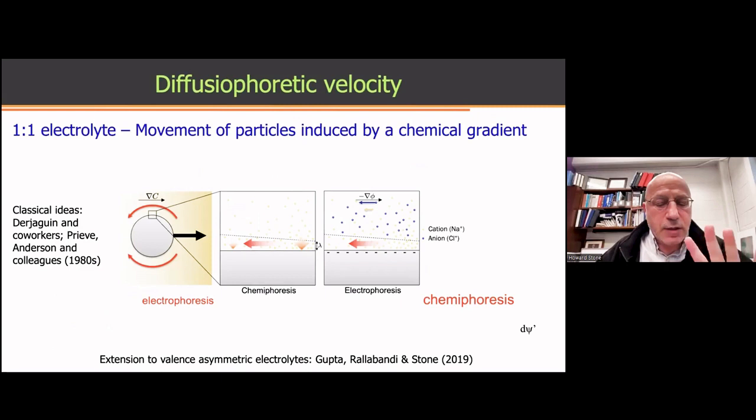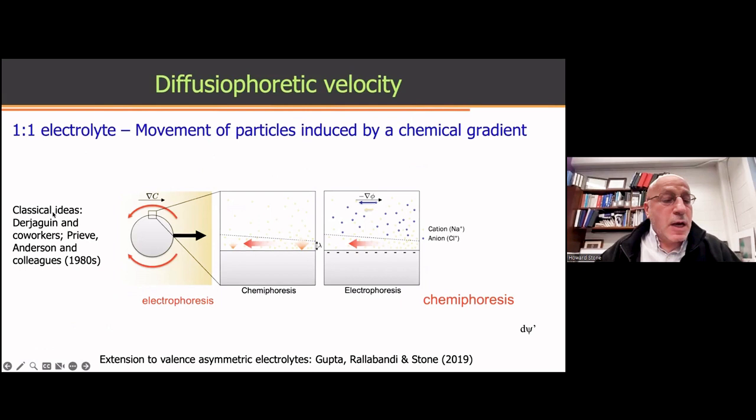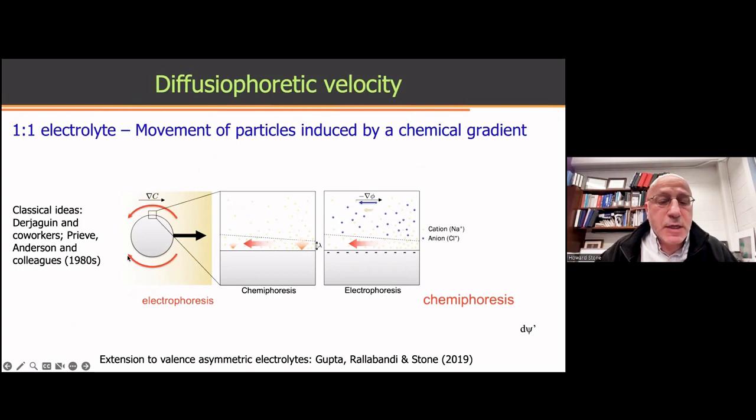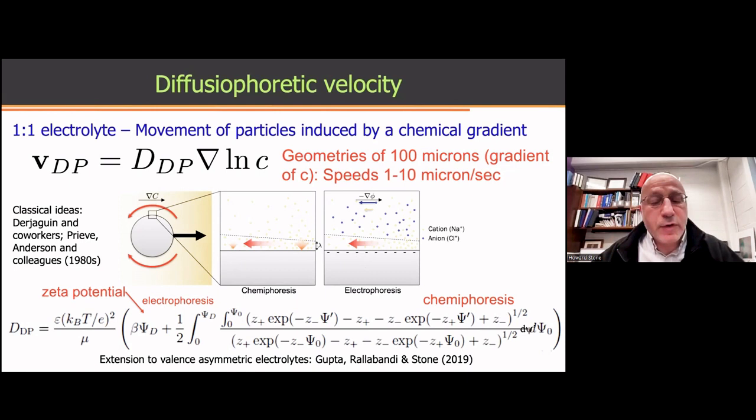If you go into the details of this field, I encourage you to read early work from John Anderson and Dennis Prieve from the 1980s. They will talk about two different contributions to this effect. One is really an osmotic pressure effect because that's chemical. It's referred to as chemiphoresis. And one is this electric field effect I told you about, so that's called electrophoresis. And they both cause motion of the fluid relative to the boundary.